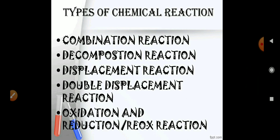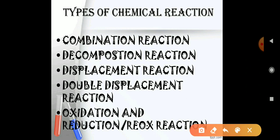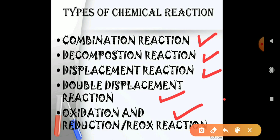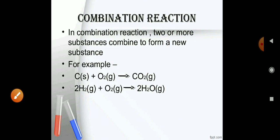Here we are going to study different types of chemical reactions. Majorly, we have four types: combination reaction, decomposition, displacement, and double displacement. The fifth type shown is oxidation and reduction reaction, which can take place within any of the above four reactions. So mainly we have to study these four types.